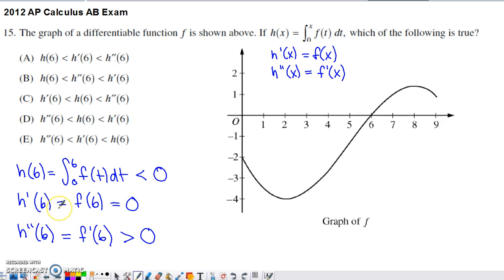If you think about h prime of 6, h prime of 6 is going to correspond to f of 6. f of 6, you can take right off of the graph. f of 6 is 0, just the y value from the graph, since this is essentially a graph of h prime of x.